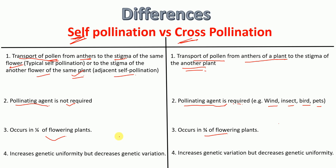The next difference is that because self-pollination happens within the same plant, it increases genetic uniformity but decreases genetic variation. Whereas in cross-pollination, genetic variation increases but genetic uniformity decreases, because pollination is happening between different plants.